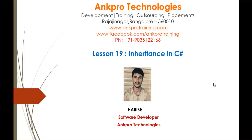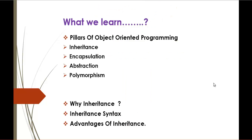In this session, we'll learn the pillars of object-oriented programming. The pillars of object-oriented programming include inheritance, encapsulation, abstraction, and polymorphism. But right now in this session, we're going to concentrate only on inheritance. And later, we'll learn why inheritance, the inheritance syntax, and the advantages of inheritance in the coming slides.